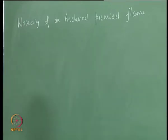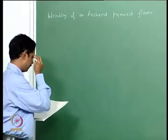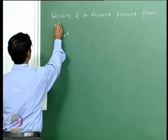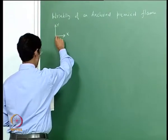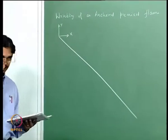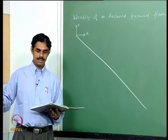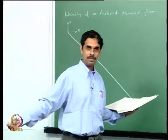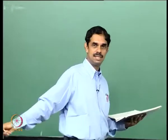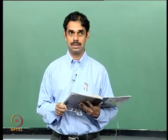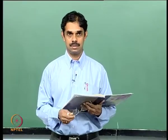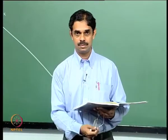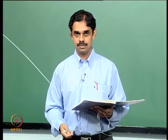Let us first take a look at the geometry of what we are studying. This is the lab coordinate system x and y. This is the mean flame — if there are no fluctuations and we have a steady flame, how does the steady flame exist for a premixed flame? The premixed fuel-air velocity must balance the flame velocity.